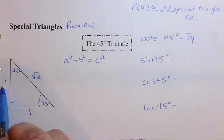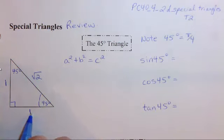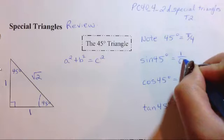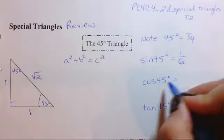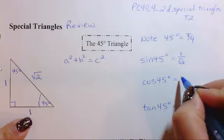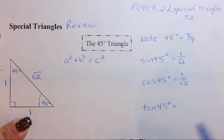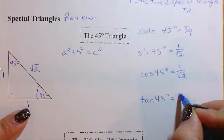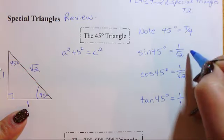So here for sine of 45 degrees, if I choose this as my angle, this is my opposite, this is my hypotenuse, this is my adjacent. I can fill this in so that it's opposite which is 1 over root 2. Hypotenuse, adjacent over hypotenuse is going to be 1 over root 2, and tan is going to be opposite over adjacent which is 1 over 1.